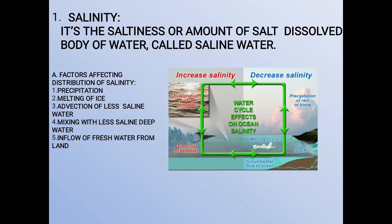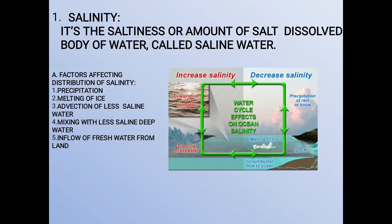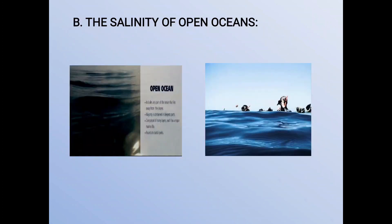Now we will see the salinity of open oceans. The open oceans may be divided into three parts: the equatorial oceans, the tropical oceans, and the polar oceans. In the equatorial regions of the oceans, the salinity of water is less and it is 35 percent. Near the mouths of large equatorial rivers like the Amazon and the Congo, the salinity is very low.